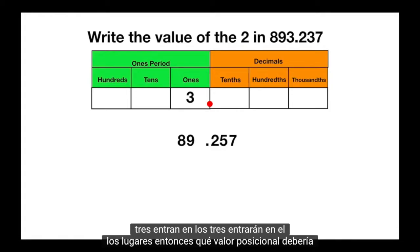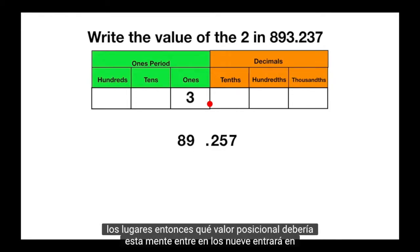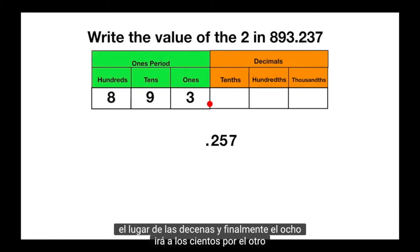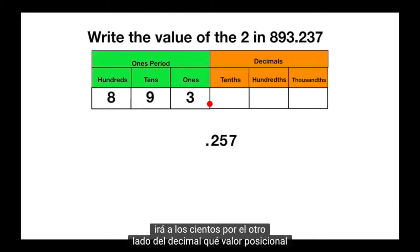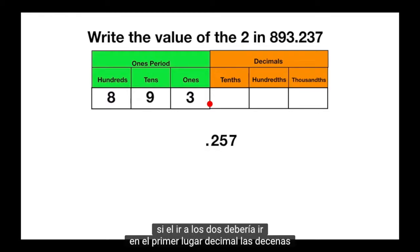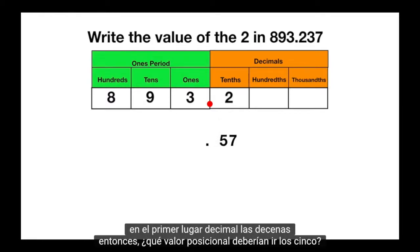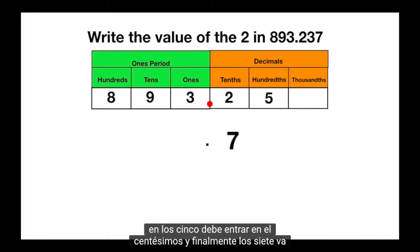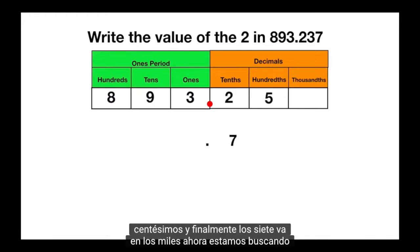Then what place value should this 9 go into? The 9 will go into the tens place. And finally the 8 will go into the hundreds. On the other side of the decimal, what place value should the 2 go into? The 2 should go into the first decimal place, the tenths. Then what place value should the 5 go into? The 5 should go into the hundredths. And finally the 7 goes into the thousandths.